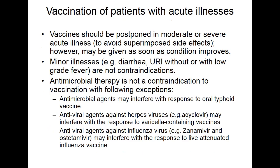Regarding vaccination in patients with acute illness: vaccines should be postponed in moderate to severe acute illness, because you cannot evaluate whether a reaction is due to the vaccine or the infection. Vaccines should be given as soon as the acute illness improves. Minor illnesses have no contraindication for vaccination. Antibiotics generally have no contraindication to vaccination, except that antimicrobial agents may interfere with the response to oral typhoid vaccine.